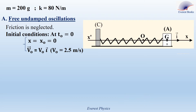On a table, we consider block A of mass 200 grams, fixed at one end to a massless spring of force constant 80 newtons per meter; the other end of the spring is attached to a fixed support C. A slides on a horizontal rail and its center of mass G can move along a horizontal x-axis. At equilibrium, G coincides with the origin O of the x-axis. At an instant T, the abscissa of G is x and its velocity is Vi, where V equals x prime, which equals dx/dt. The horizontal plane containing G is taken as the gravitational potential energy reference.